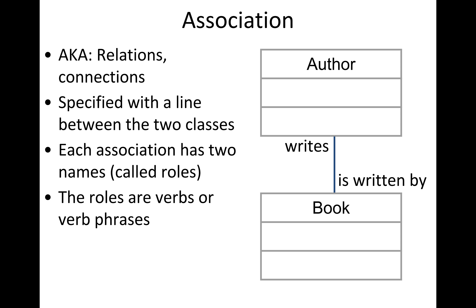Associations allow us to capture the relationships between two different classes — also known as relations, connections, or links. Usually it's a two-way relationship depending on which side you view it from. From the author's point of view, the author writes books. From the book's point of view, a book is written by an author. Typically you should be able to read this as a full sentence, starting from one class and navigating to the other. It's specified as a line.